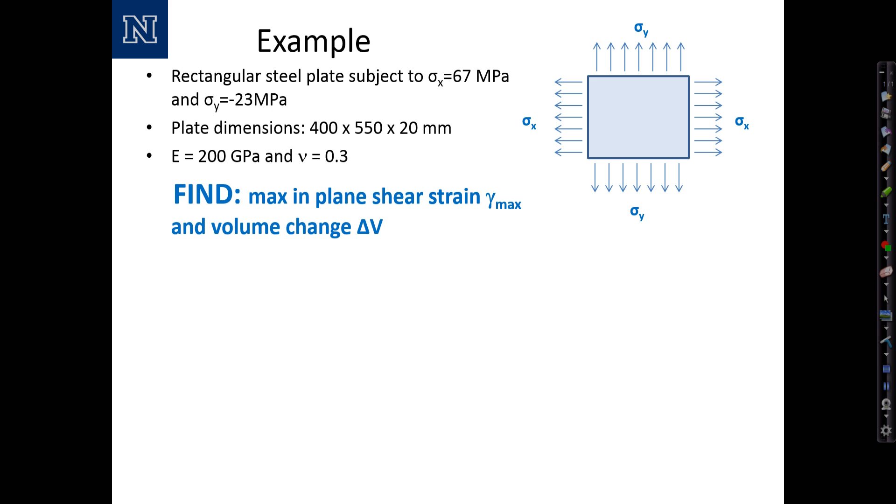Again, we have the recognition that this is a biaxial stress state with no shear stress. Therefore, sigma p1 equals sigma x and sigma p2 equals sigma y. We have a Mohr's circle with the principal stress sigma p1 at 67 and sigma p2 at negative 23, which makes a Mohr's circle where the maximum shear stress tau max would be the radius of the circle: tau max equals sigma p1 minus sigma 2 over 2, or sigma x minus sigma y over 2. This equals 67 minus negative 23 over 2, which computes to 45 megapascals.